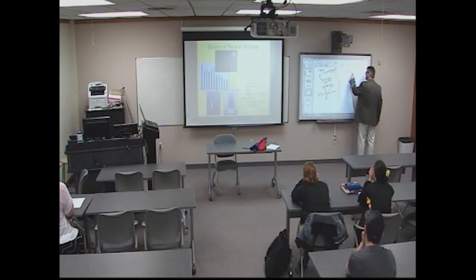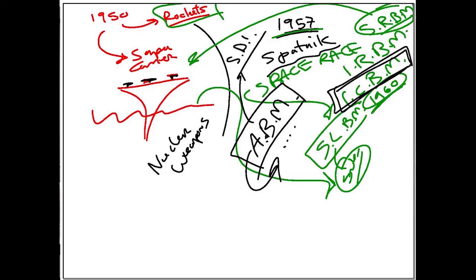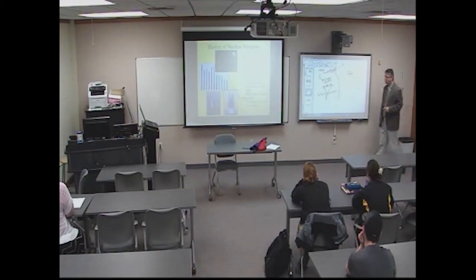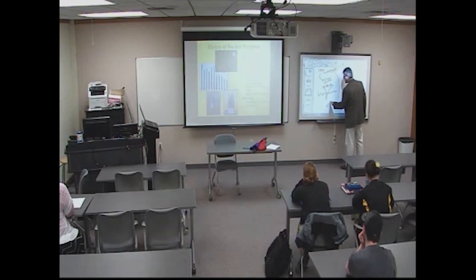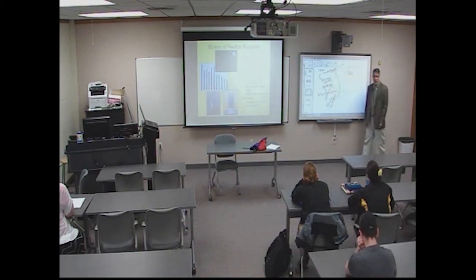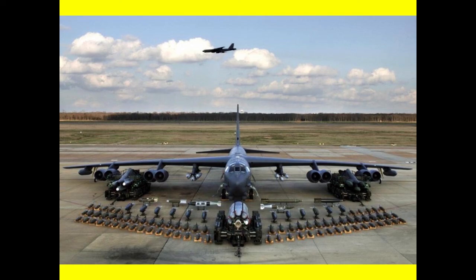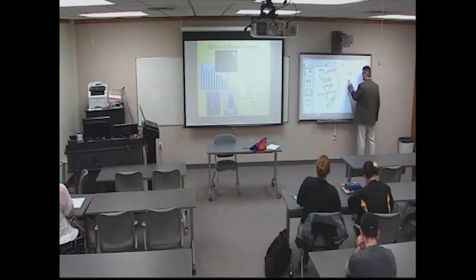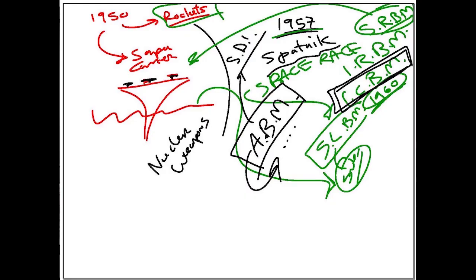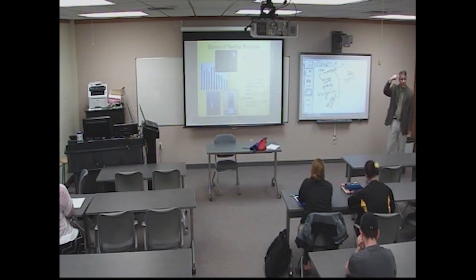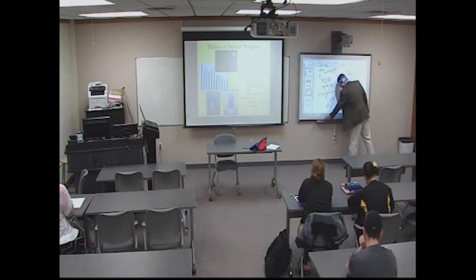So our approach to nuclear weapons in the 50s: we're just going to use bombers. We create long-range bombers — some that can go from the United States, fly to the Soviet Union, and return. But then what happens in 1957? This scares the bejesus out of us. It's nothing — it's a basketball. They send a basketball and have it in orbit. But if they can put a basketball in orbit, what else can they do? Like bombs.